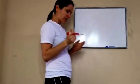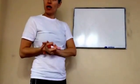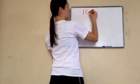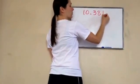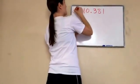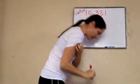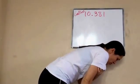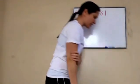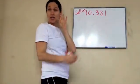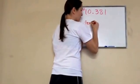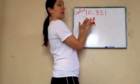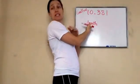Sheila pulled into the gas station and filled up her car with gas. Here's how much gas she got: ten point three eight one gallons. This wasn't the price, this is how many gallons. They want me to round this to the nearest tenth of a gallon.